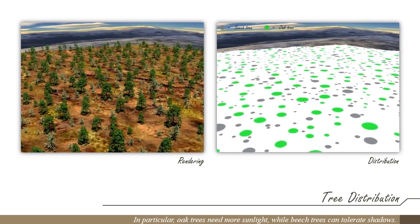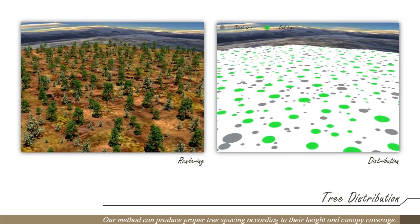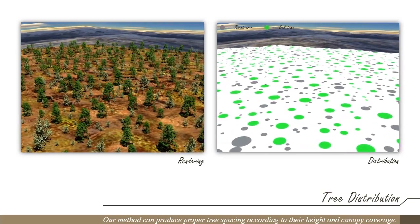In particular, oak trees need more sunlight, while beech trees can tolerate shadows. Our method can produce proper tree spacing according to their height and canopy coverage.